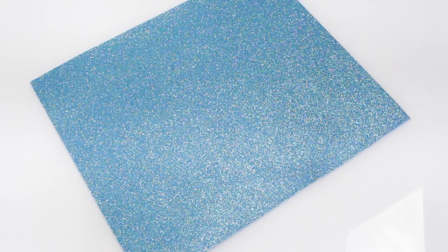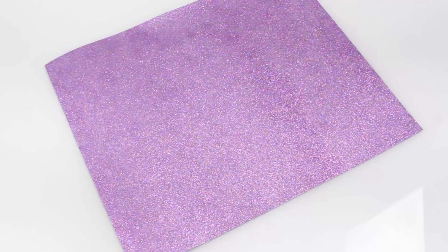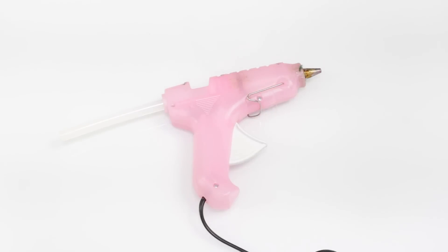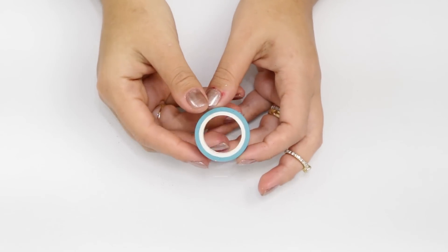E pra fazer o nosso caderno de sereia, nós vamos precisar de EVA nas cores azul e lilás. Se você puder ter um EVA com brilho, vai ficar mais bonito ainda. Se não, só o EVA simples já funciona.